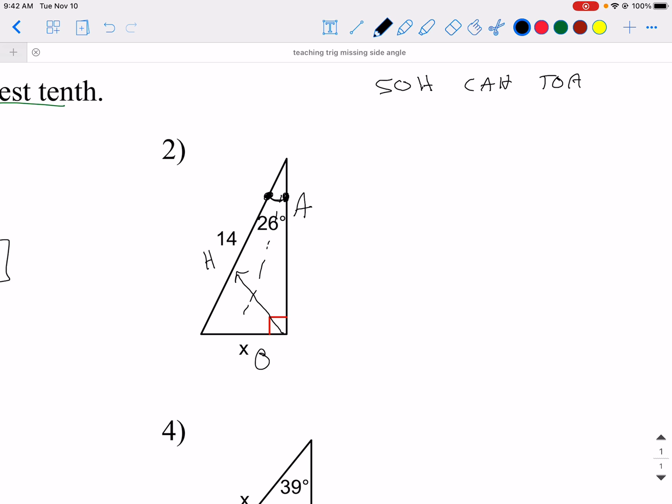All right, so again, I'm going to look and see what it gives me. I have no value with my A, so that's not going to help. I have a value with an X. An X is my O, and a 14 is my H. So, this is also going to be sine. This time, the degree is 26. Right here, the 26 equals opposite, which is X, over hypotenuse, which is 14.